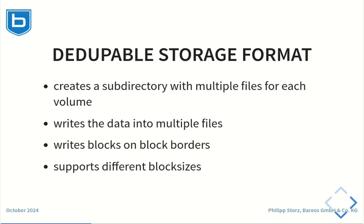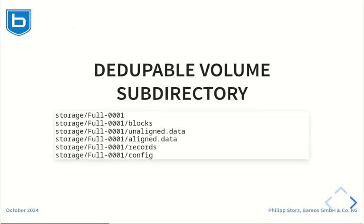As a dedupable format requires random access, it cannot be stored on tape volumes directly. Here you can see the content of a dedupable volume. A directory with a volume name — in this case full01 — contains five files. The config file contains the configuration of this dedupable volume. The blocks and record files contain the metadata for the blocks and records. Aligned data blocks are stored in the aligned data file, and unaligned data is stored in the unaligned data file.